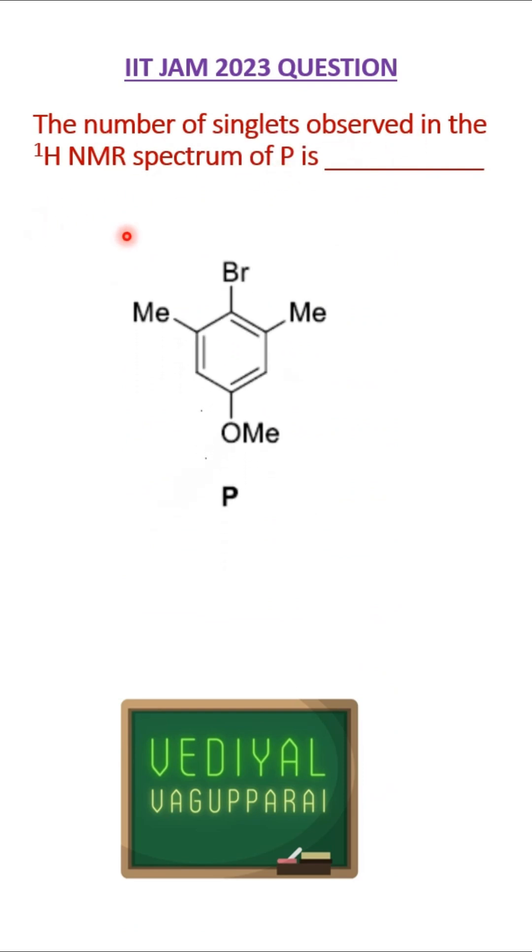The number of singlets observed in the proton NMR spectrum of P is. So we are given an organic molecule and we are supposed to find out the number of singlets in these signals that we are going to assign to this particular organic molecule.